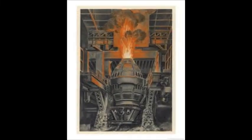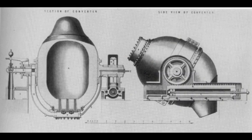The ingenuity of the Bessemer process used hot air to be blown into the furnace during the iron melting process. This allowed for the carbons to be filtered out, which would create a much stronger steel.